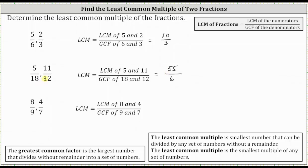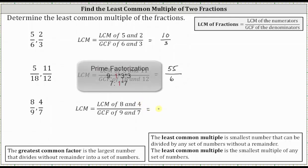For the last example, we want to find the least common multiple of 8/9 and 4/7, which is equal to the fraction where the denominator is the greatest common factor of nine and seven, and the numerator is the least common multiple of eight and four. The greatest common factor of nine and seven is the largest number that divides both without remainder. Nine and seven don't share any common factors other than one, so the greatest common factor of nine and seven is one.